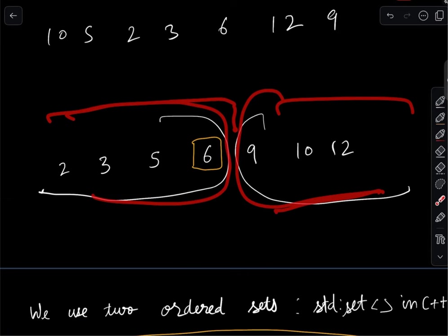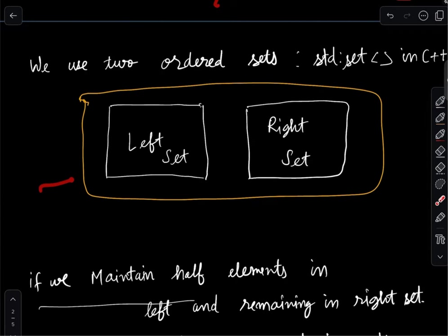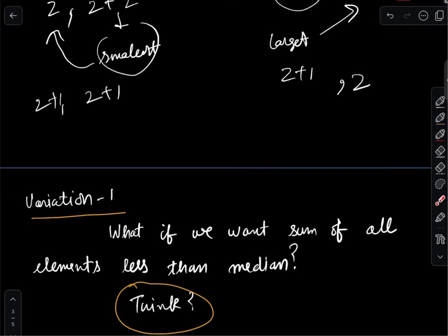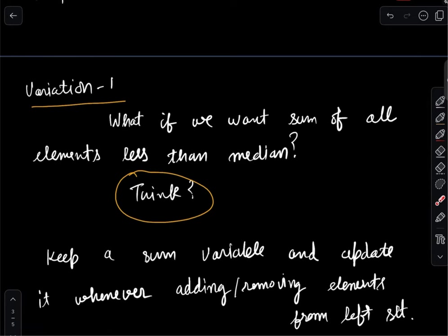The answer is simple: the left and right sets already hold the elements. We just need the sum of elements in the left set. We maintain a variable 'sum': whenever we insert an element into the left set we add it to sum, and whenever we remove from it we subtract it. Similarly, if someone asks for the sum of all odd elements less than the median, we just check whether the number is odd before updating sum.